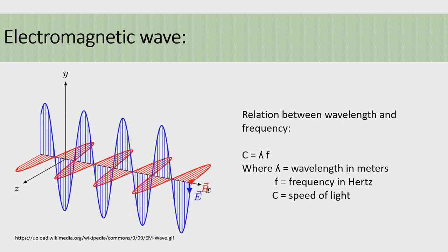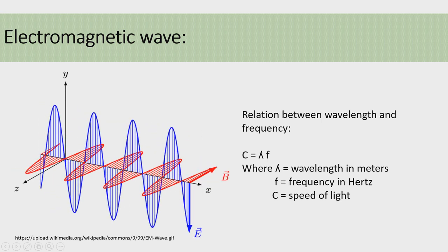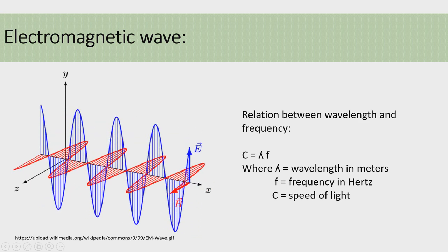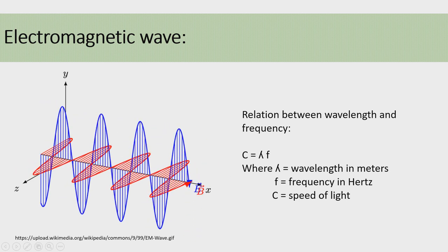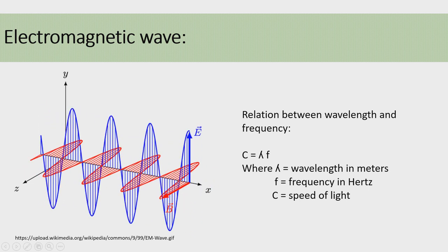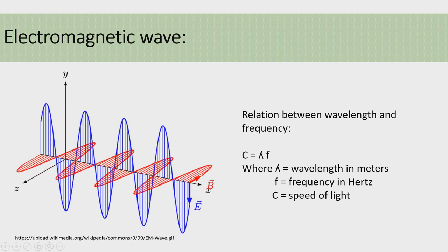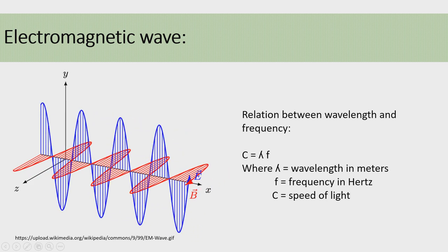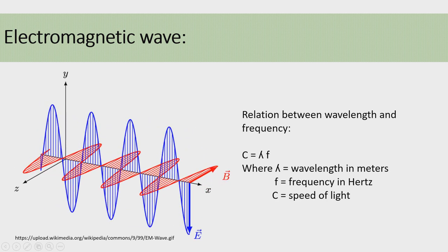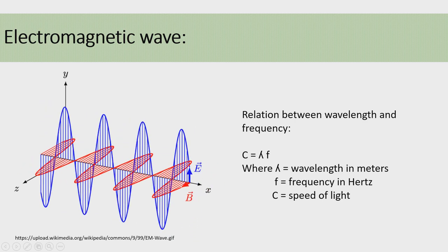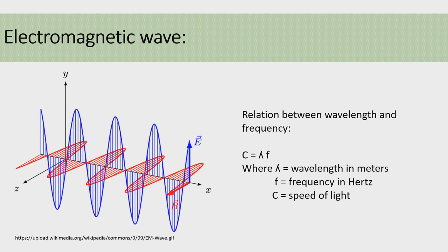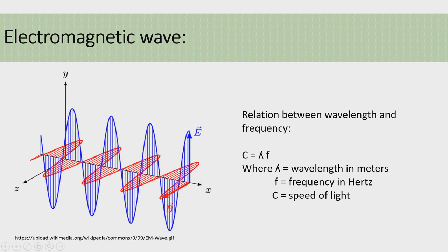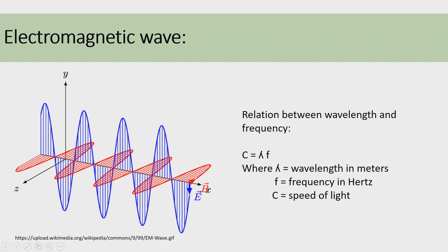We should know the relation between wavelength and frequency. This relation is c = λf. Lambda is the wavelength of the wave in meters — wavelength is the distance between two consecutive positive peaks in a sine wave — and f is the frequency of the wave, measured in hertz.